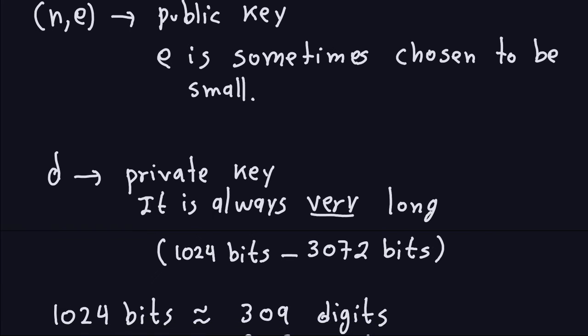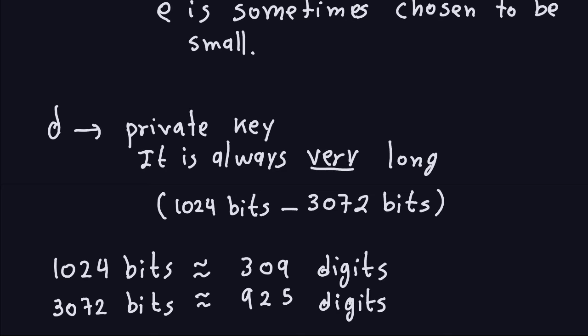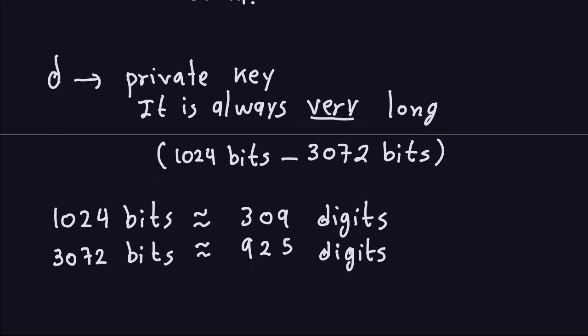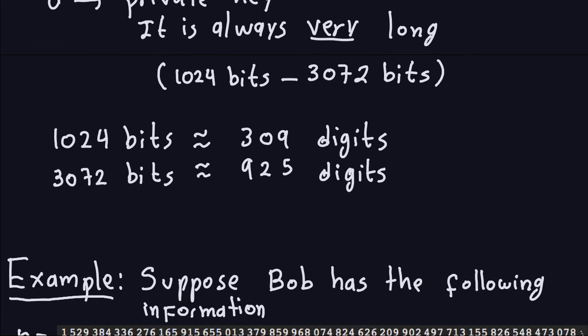Just to give you an idea: a number that is 1024 bits will roughly be about 309 digits, and a number that is 3072 bits will usually be about 925 digits. So we're talking about very big numbers. n also has to be big because to compute n you need to find two large prime numbers p and q, and that is important so that RSA is not easily crackable.